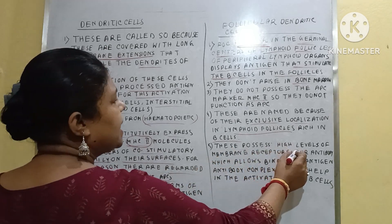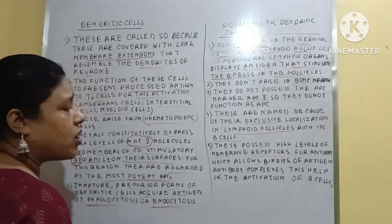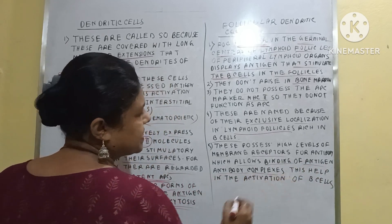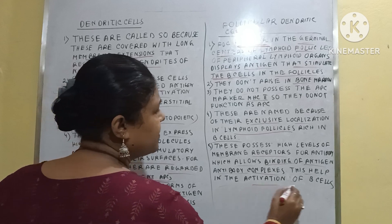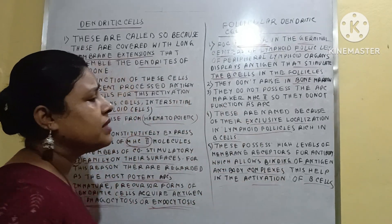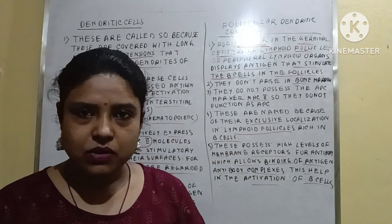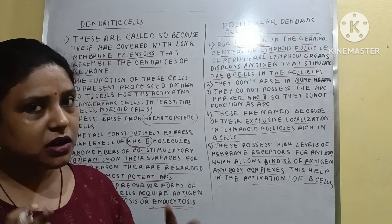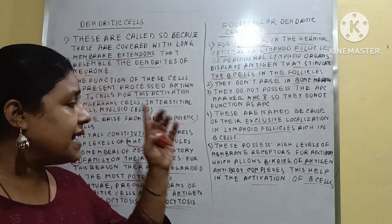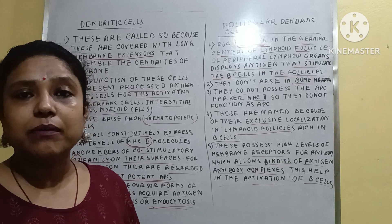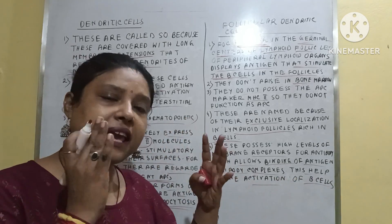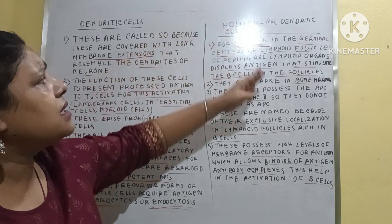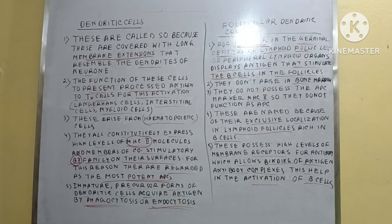Follicular dendritic cells possess high levels of membrane receptors for antibody, which allows the binding of antigen and antibody complexes. This helps in the activation of the B cells. They have antibody receptors, and the antigen directly binds to the receptor of the antibody to form the antigen-antibody complex. By the formation of this complex, the B cells become activated and the destruction of antigen is possible by the B cells.